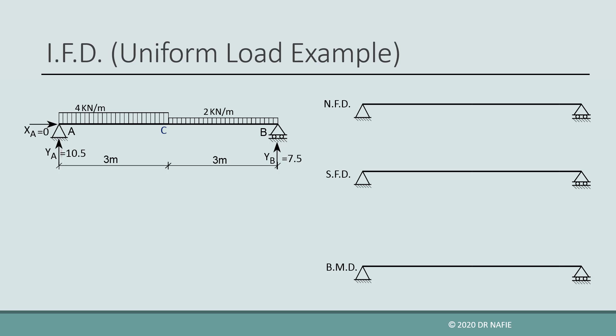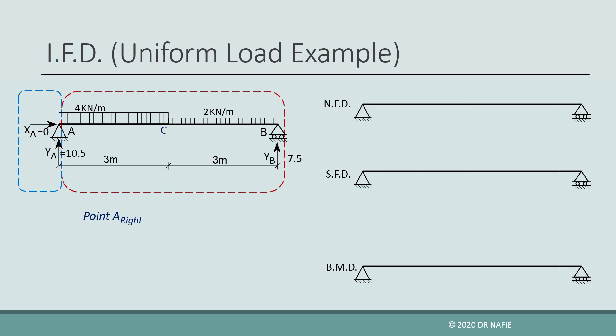We start at support A by evaluating the internal forces just to the right of point A. As detailed in a previous lecture, we calculate the internal forces at the point by dividing the beam into two parts at that point, and using the forces in only one of the two parts to evaluate the internal forces. We are free to use any one of the two parts, but take care that the sign convention for the left part is opposite to that of the right part.